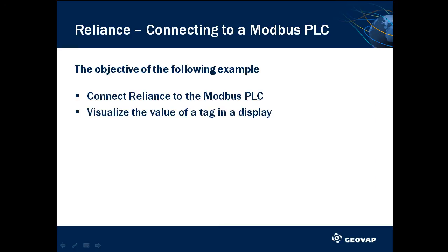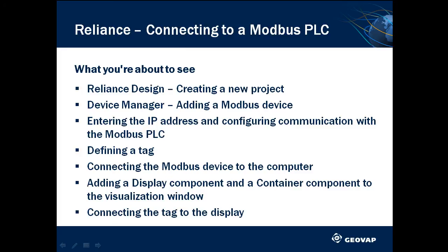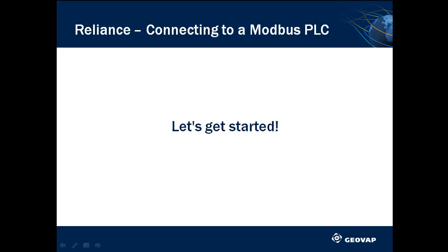In today's example, we'll be connecting Reliance to a Modbus PLC and displaying the value of a tag. We will also show you some of the settings just mentioned. First, we'll create a new project in Reliance Design, then open the device manager and add a device of type Modbus. After that, we will configure communication, define a tag, connect the Modbus device to the computer, place a display and a container in the visualization window, and connect the display to the tag. The container will allow us to view communication with the PLC. Finally, we will run the project to make sure everything works. So, let's get started.